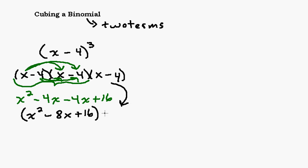We still have to bring down this other x minus 4. We just multiplied two of them together, but now we have to take our answer, x squared minus 8x plus 16, and multiply that by x minus 4. The way we do that is take each term in this trinomial and multiply it by each term in this binomial. I'll try to do this with colors to make it easier to see.